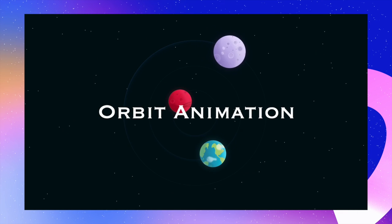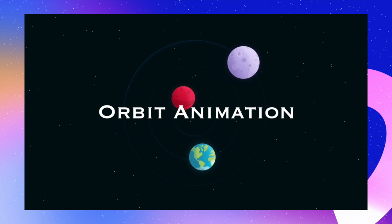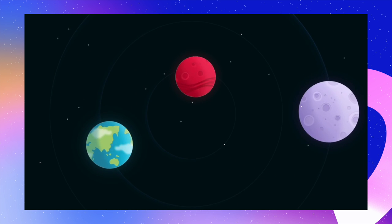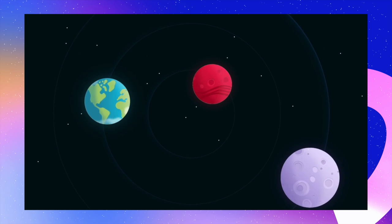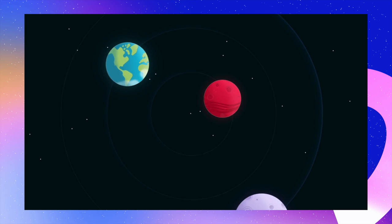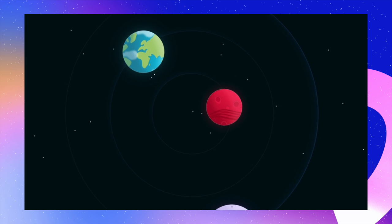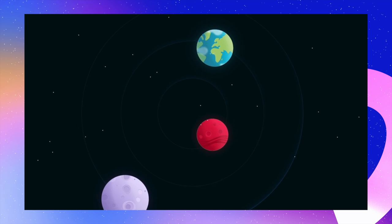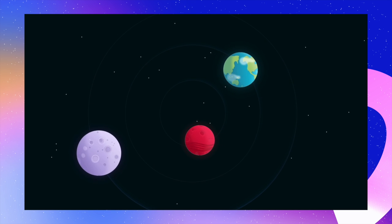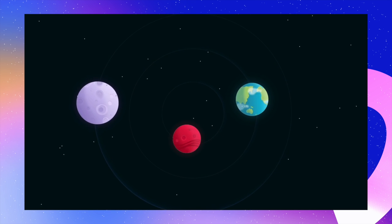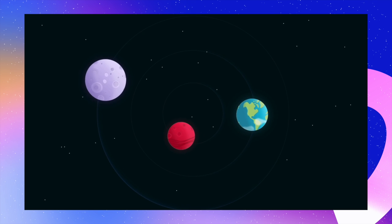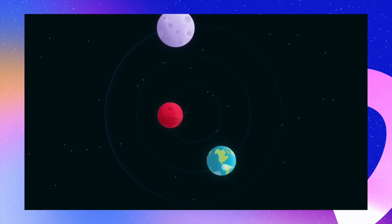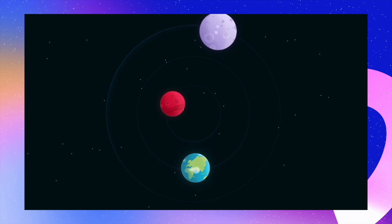Today we're going to create this beautiful orbit animation in Framer. It's not just about planets rotating — you can create multiple options: logos rotating, avatars rotating around a company's logo. There could be multiple use cases, but I'm going to explain how to do this for this simple example of a solar system I created.